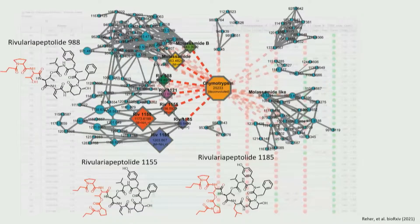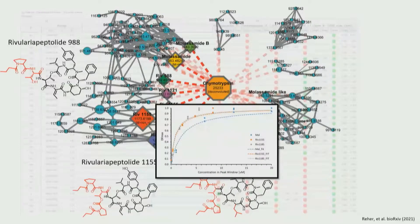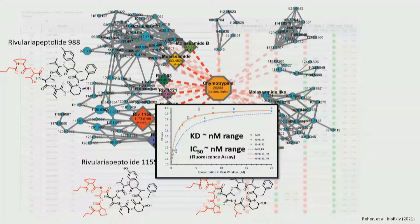Having pure compounds available allowed us to then do binding studies to estimate Kd values, which showed that they were actually pretty potent. We also confirmed their activity with some orthogonal competition assays, which showed that the rivularia peptolides are actually protease inhibitors in the nanomolar range.